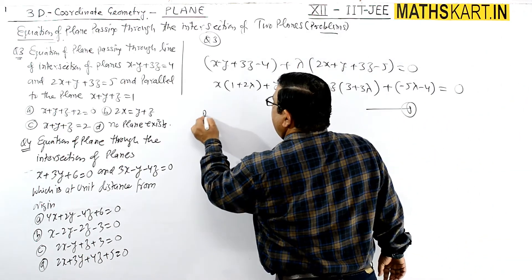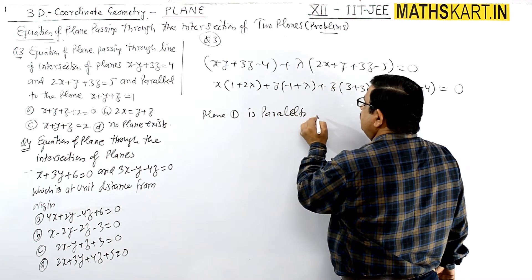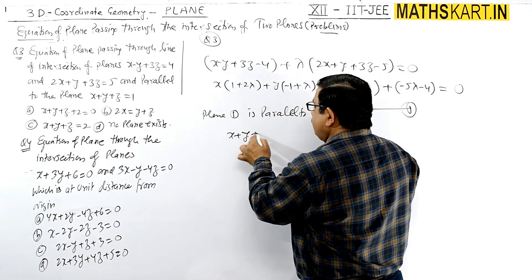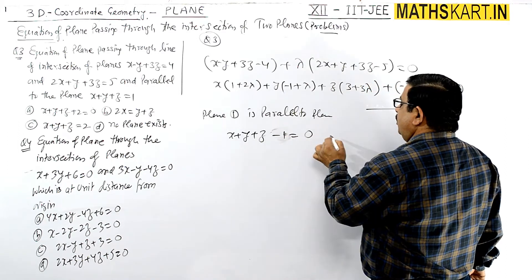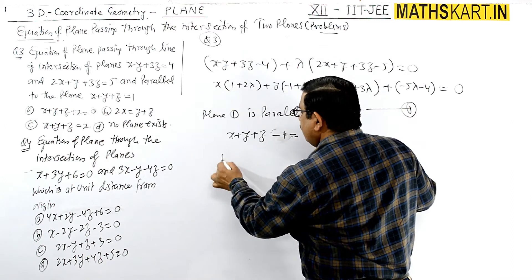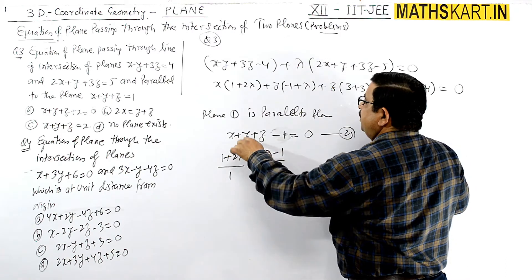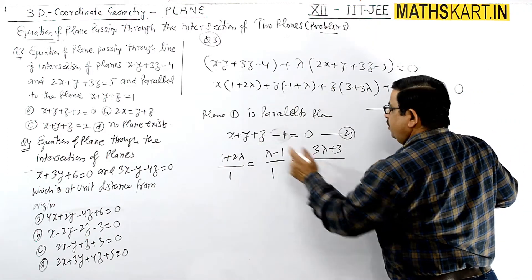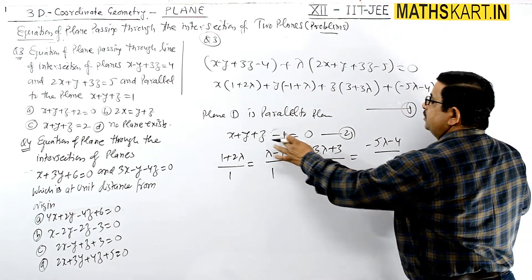This plane is parallel to x plus y plus z equals 1. For parallel planes, we compare coefficients. So: (1 plus 2 lambda) divided by 1 equals (lambda minus 1) divided by 1 equals (3 lambda plus 3) divided by 1 equals (minus 5 lambda minus 4) divided by minus 1.